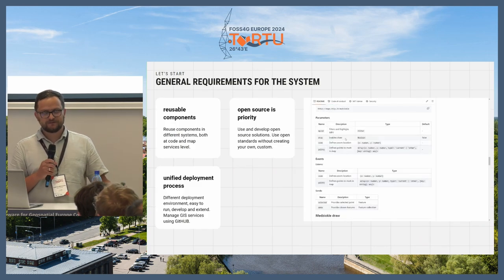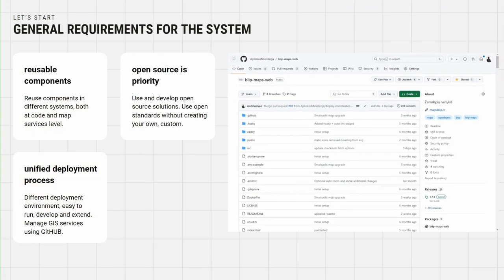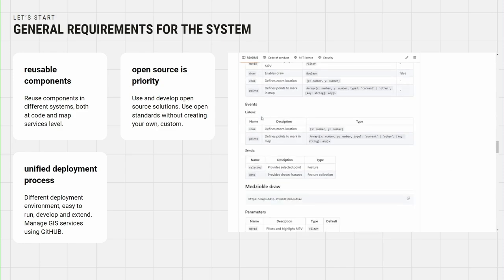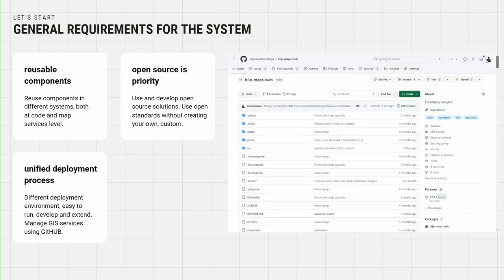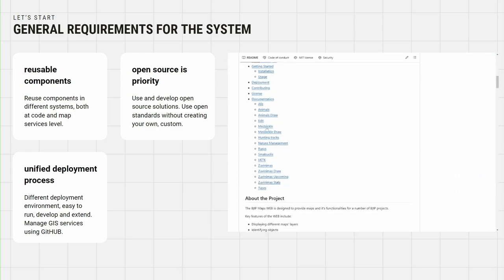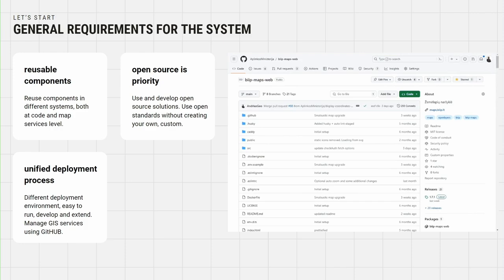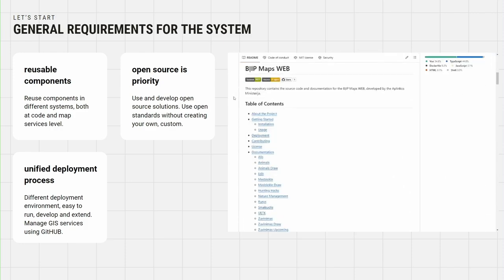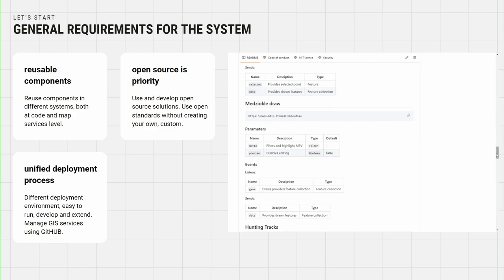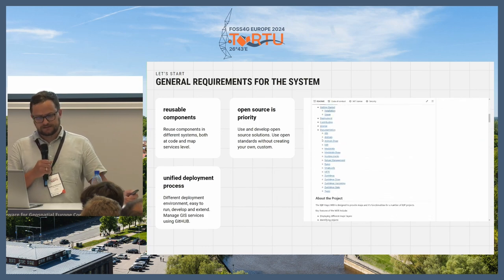We also faced some general requirements for our system. As I mentioned, this project was part of a bigger project, so the main idea was to build things to be reusable — our biggest reusable component was the web map. Also, priority on open source: not only use open source, but if we build something, open source it as well. We already have 35 repositories open sourced to the community of Lithuania and the rest of the world. We also set up unified deployments with development, staging, and production environments, and every deployment is based on GitHub Actions.